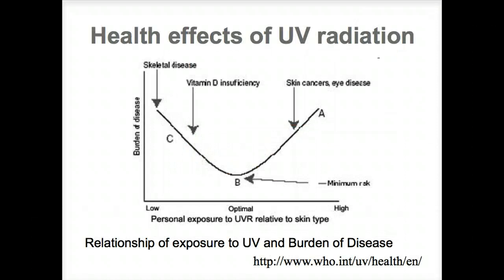Low-dose UV radiation is essential for the production of vitamin D in human skin. Unless our food sources are high in vitamin D, which many Arctic species are, we need sunlight to be healthy. UV radiation is even used to treat some skin conditions.